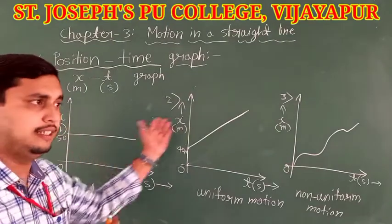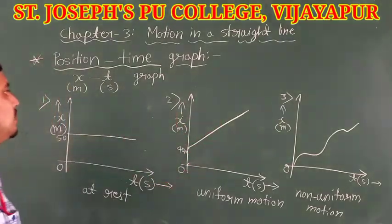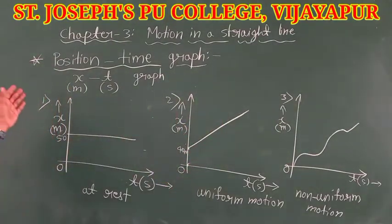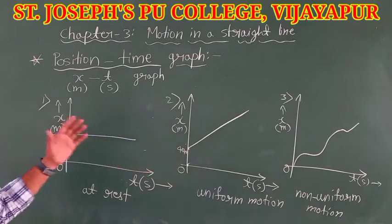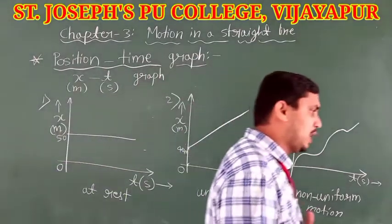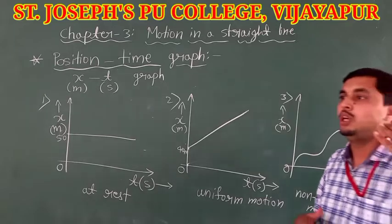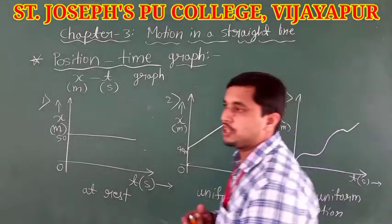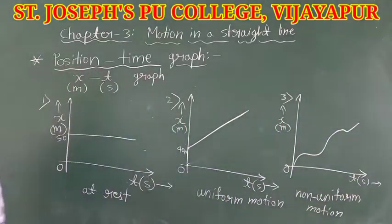These are the different types of motion represented in a position-time graph. Next, we will see other types such as positive velocity, negative velocity, zero velocity, as well as positive acceleration, negative acceleration, and zero acceleration.